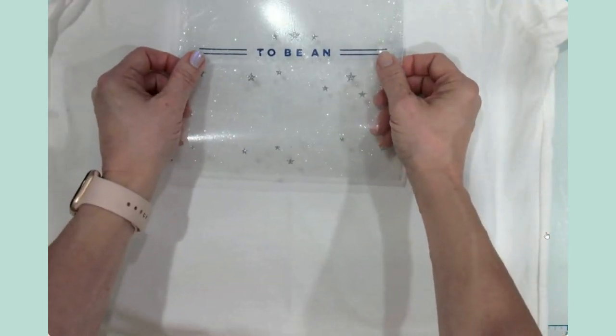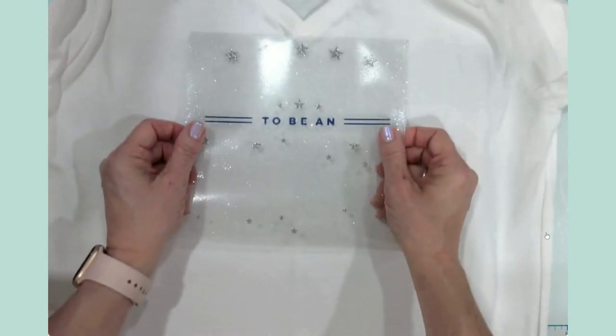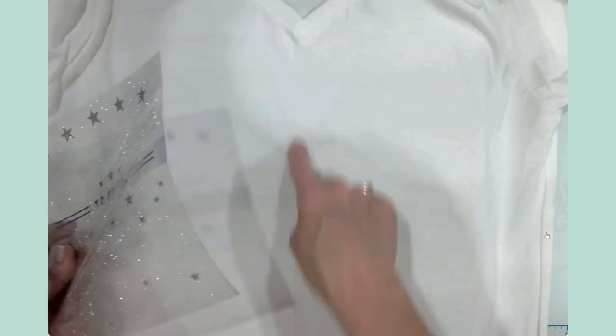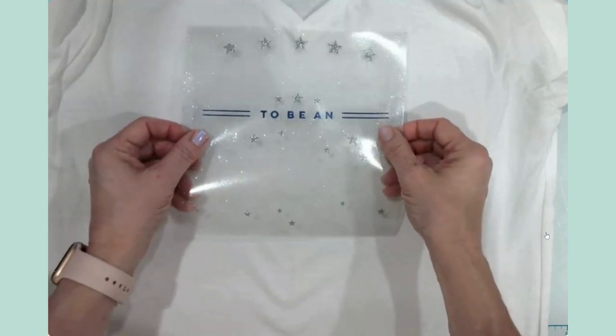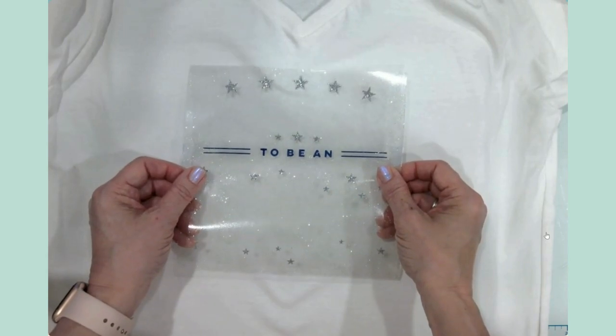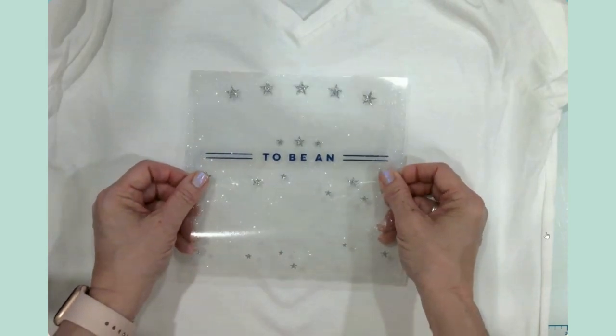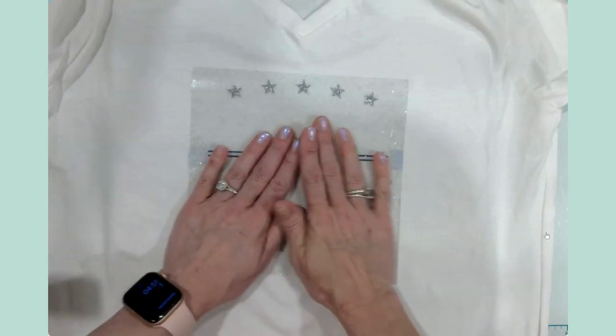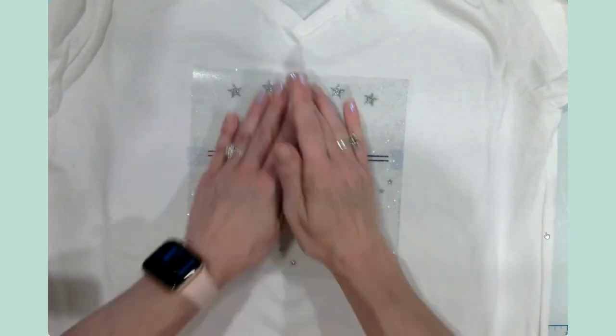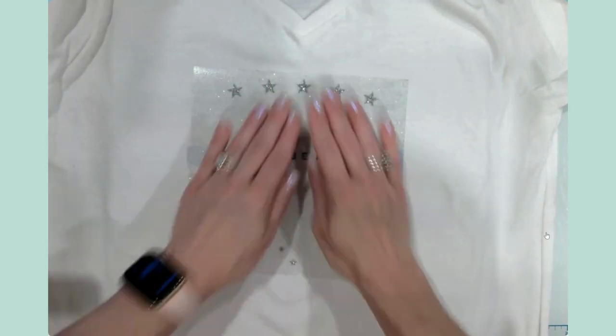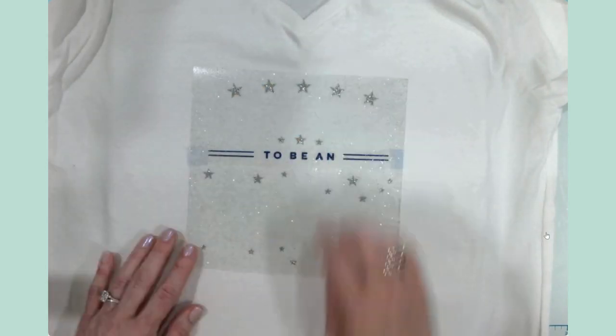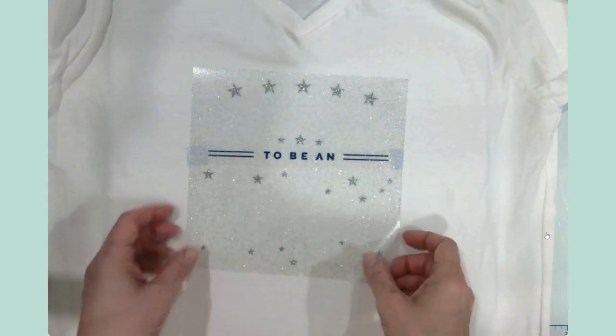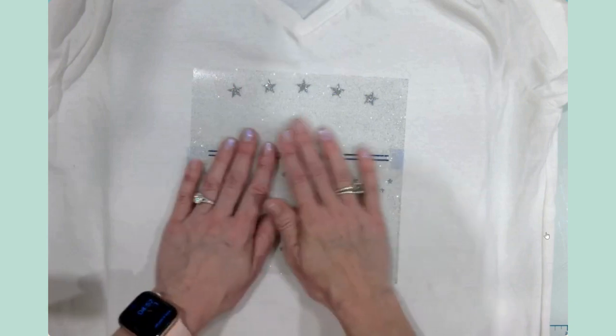So now what I'm going to do is I'm bringing this star right here. I'm going to line up with that crease and I'm just going to bring it down to where I think that I want it to be. Just like this, and this star, this star and this star are all lined up, and then this is straight.